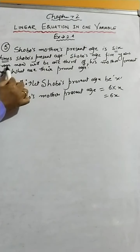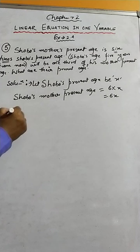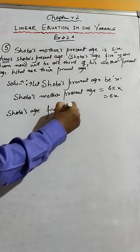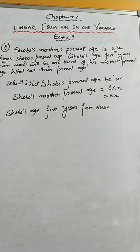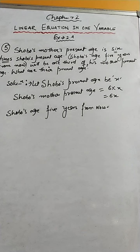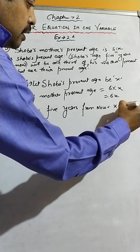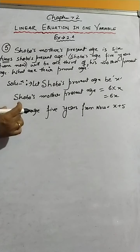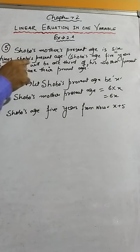Now let's move on to the second sentence: Shobu's age five years from now. This is a very important line. If Shobu's present age is X, then Shobu's age after five years would be X plus five. This is Shobu's age five years from now.